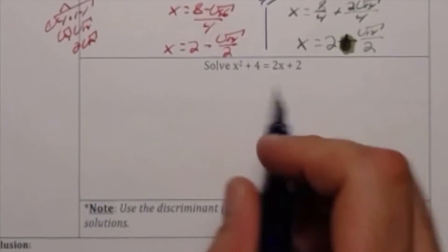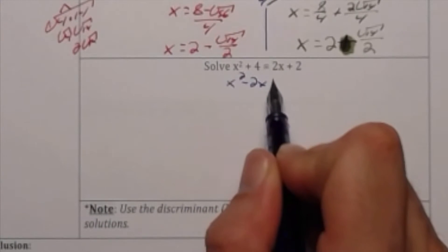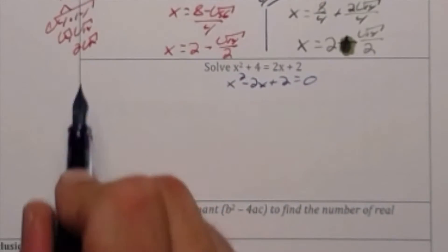In a second example where we are solving x squared plus 4 is equal to 2x plus 2, I'm going to start by getting standard form. x squared minus 2x plus 2 is equal to 0.